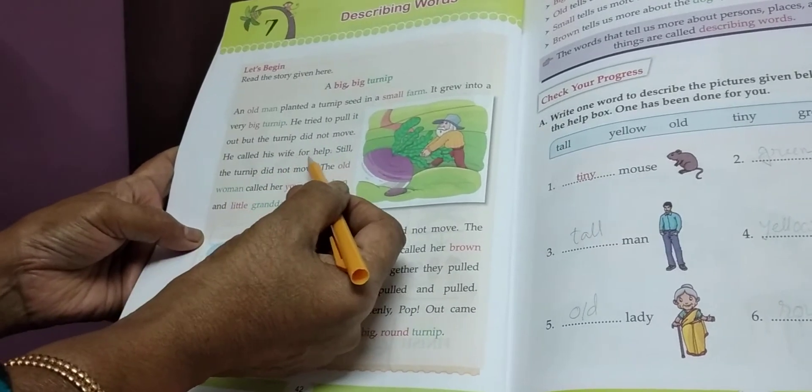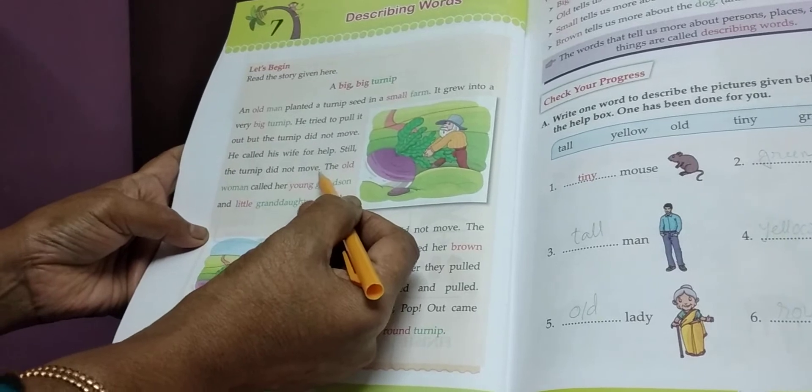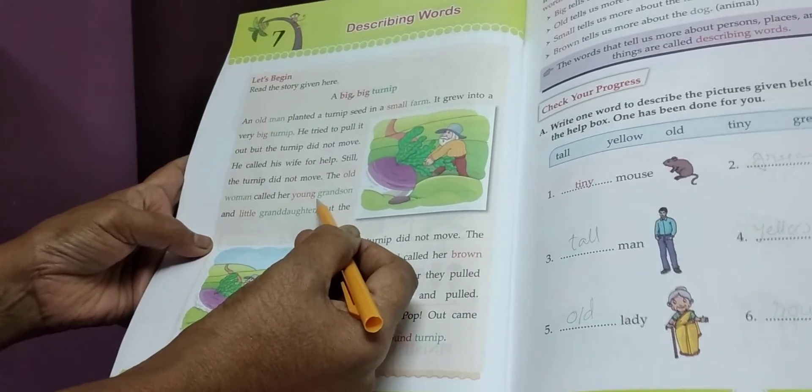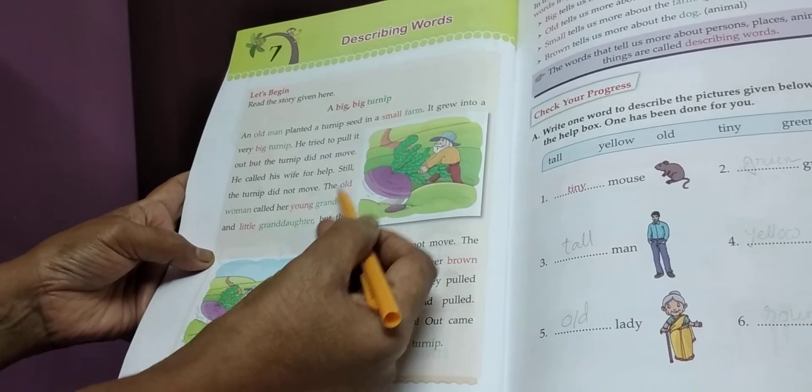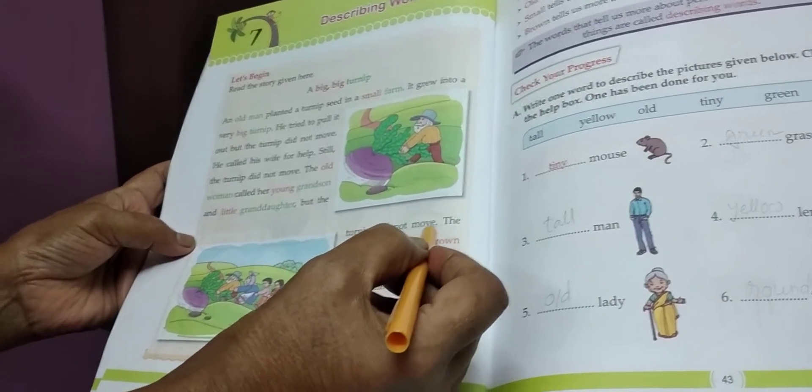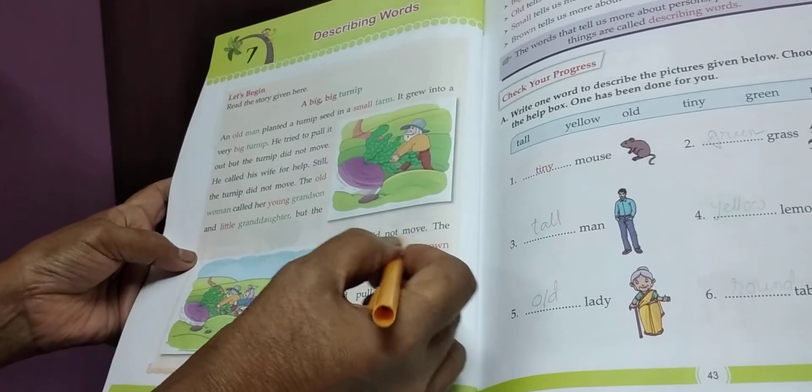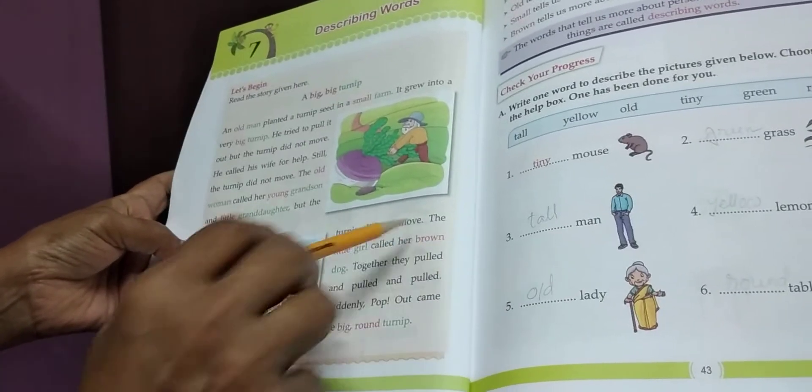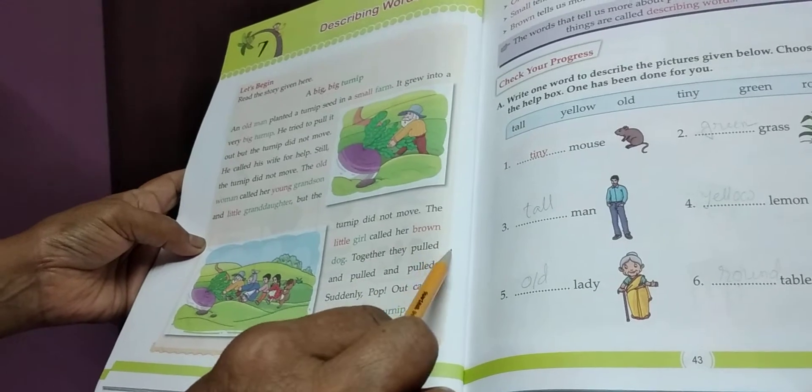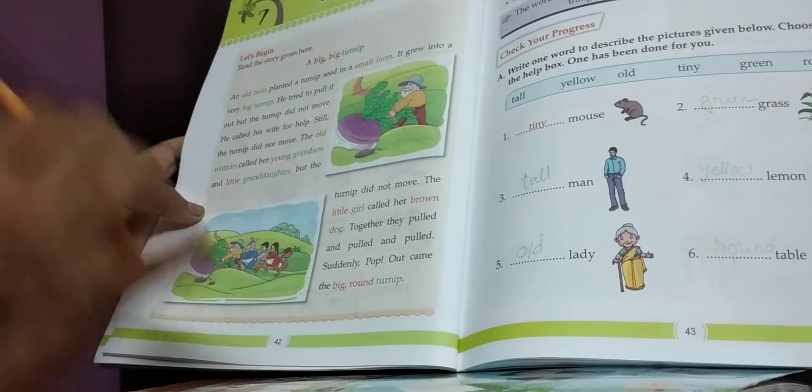What did the old man do? He grabbed the turnip and pulled hard but it did not move. The turnip did not move. He called his wife for help. The old man called his wife to help. Still the turnip did not move. But the turnip did not move. The old woman called her young grandson and little granddaughter. His wife called his grandchildren. But the turnip did not move. They pulled so much together but the turnip did not move. The little girl called her brown dog.